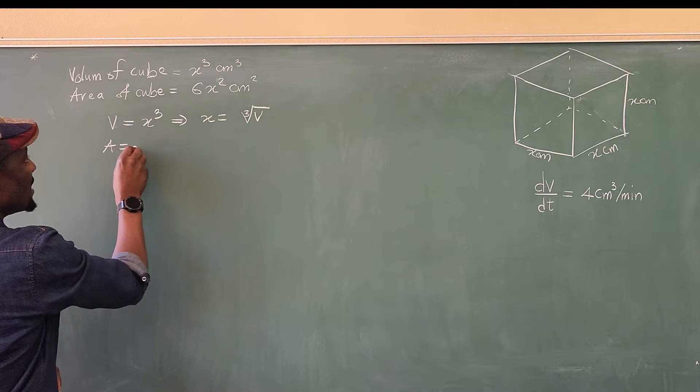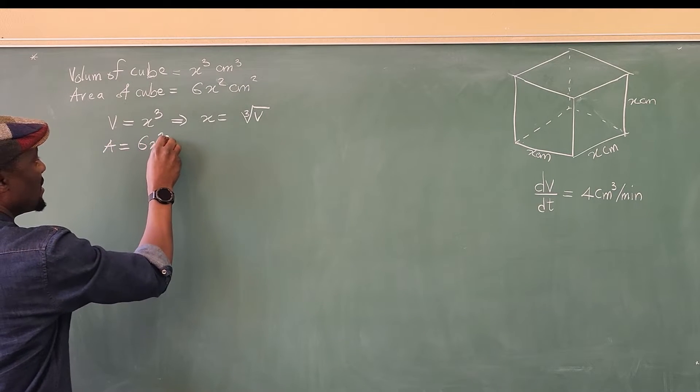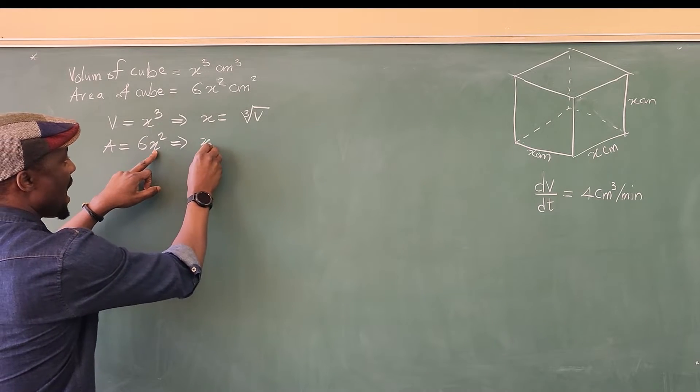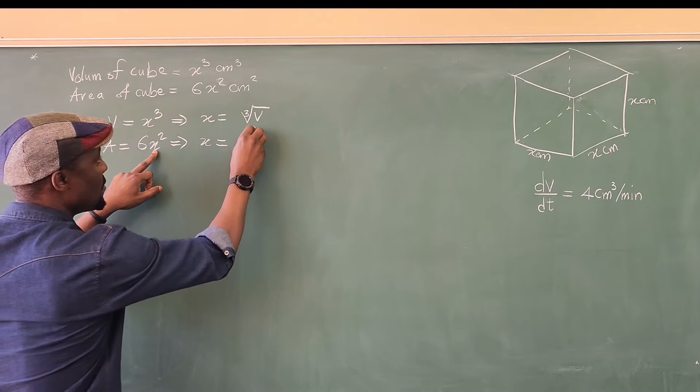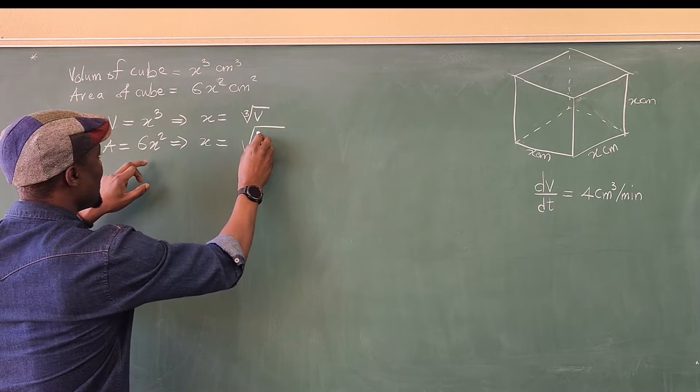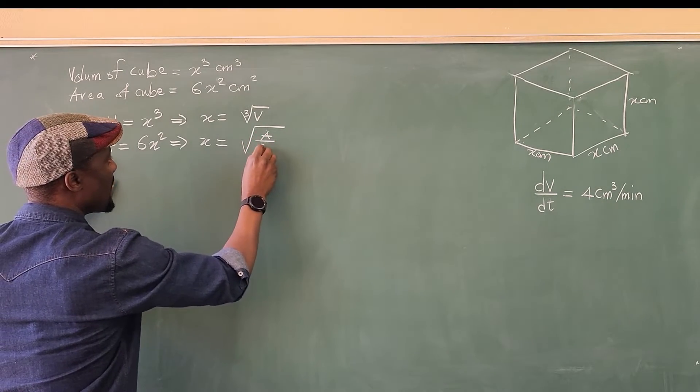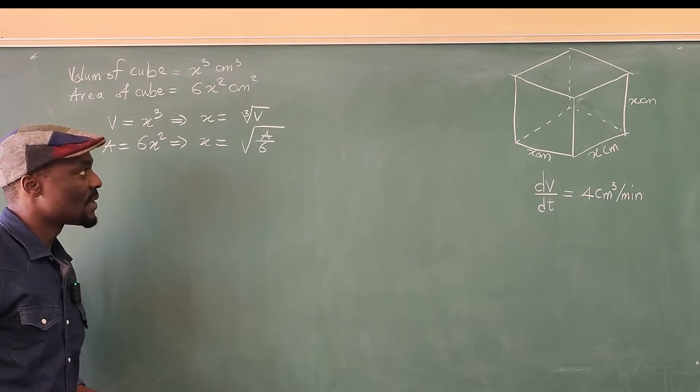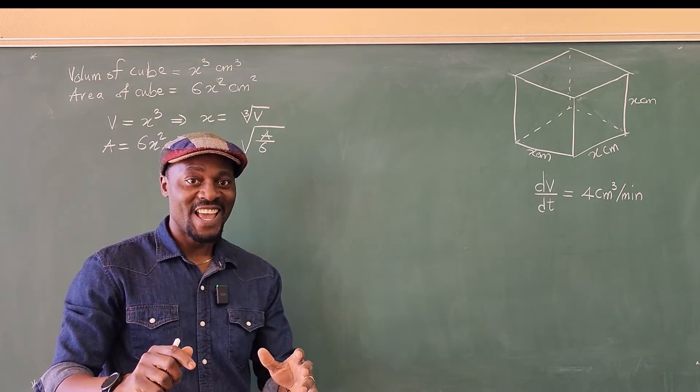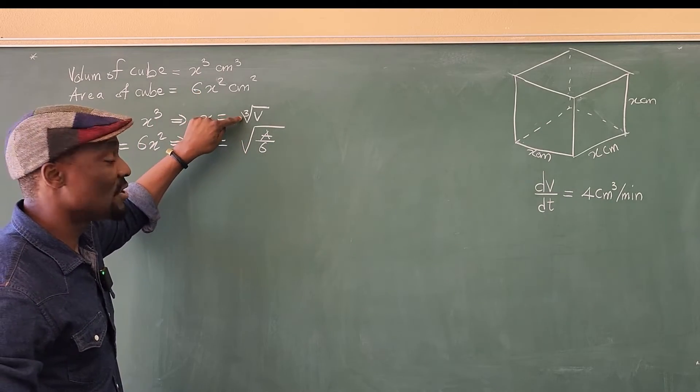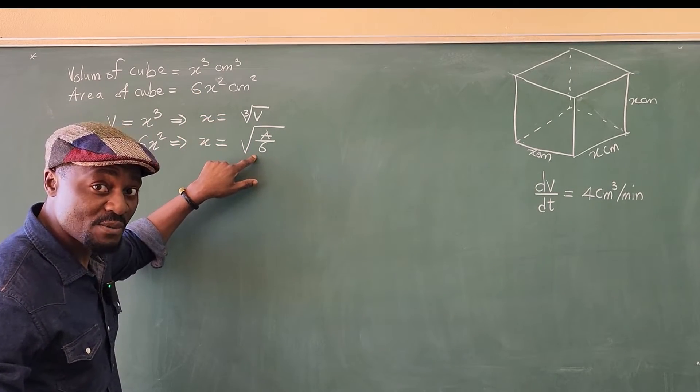You say that A is equal to 6x squared. That implies if I make x the subject, it's going to be x equals the square root of A over 6. So as you can see, I have written x in two different ways. One in terms of V, one in terms of A.